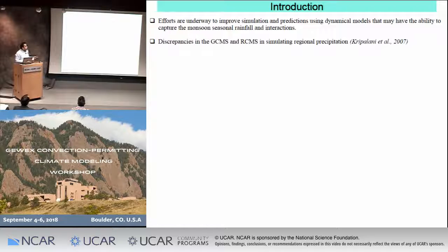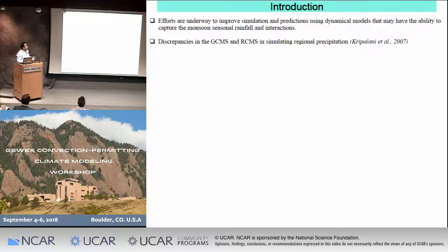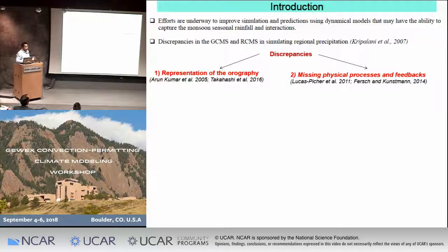I will introduce the current status of GCM and RCM simulations and whether they are able to simulate the monsoon adequately. A key paper has mentioned discrepancies in both, which can be grouped into two headings: the representation of orography and the missing physical processes and feedbacks.